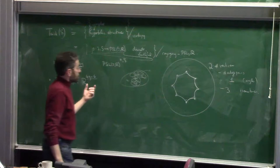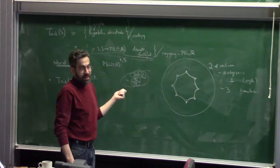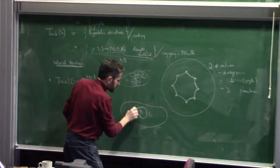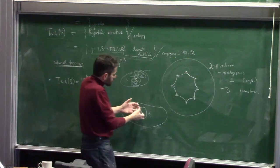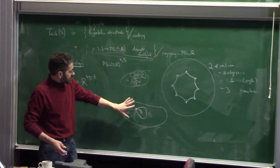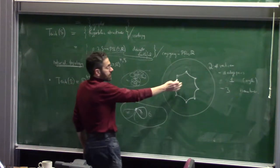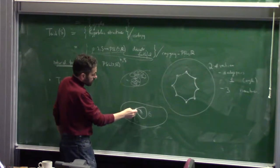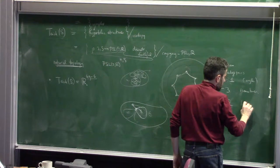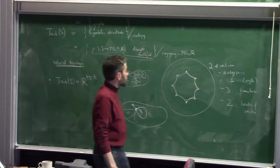Even after subtracting three for the isometries, you're still off by two. The reason is the location of the vertex in the surface. When you glue up the polygon, you have one vertex and a bunch of loops. The loops are determined by the marking — that's fixed — but the location of the vertex in the surface is actual data. You could move it somewhere else and move all the loops along with it. So subtract two more for the location of the vertex, and then you get the right answer.